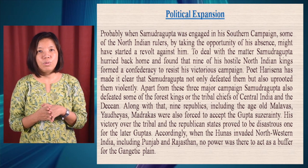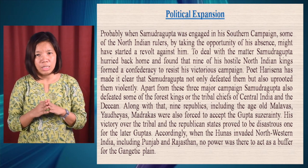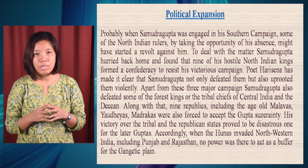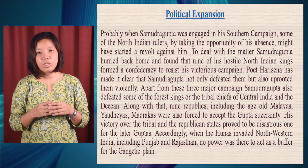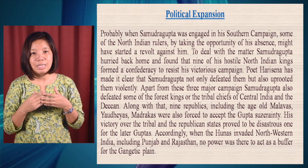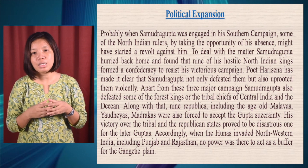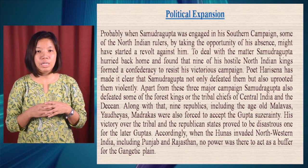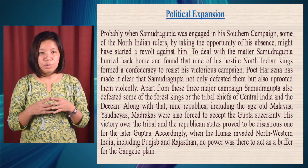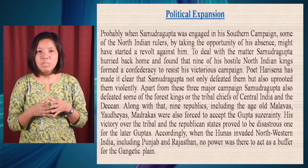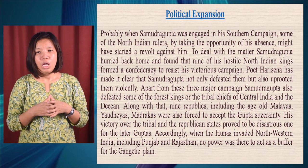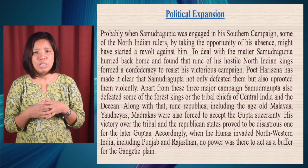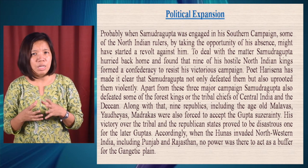Apart from his North Indian campaigns, Samudragupta also defeated some forest kings or tribal chiefs of central India and Deccan. Nine republics including the age-old Mallavas, the Yodhaya, and Madrakas were forced to accept Gupta suzerainty. His victory over the tribals and republican governments, however, proved to be very disastrous for the later Guptas, as these kingdoms were working as buffer states. Because of Gupta aggression, the Hunas later started invading the Gupta Empire, which ultimately led to its downfall.